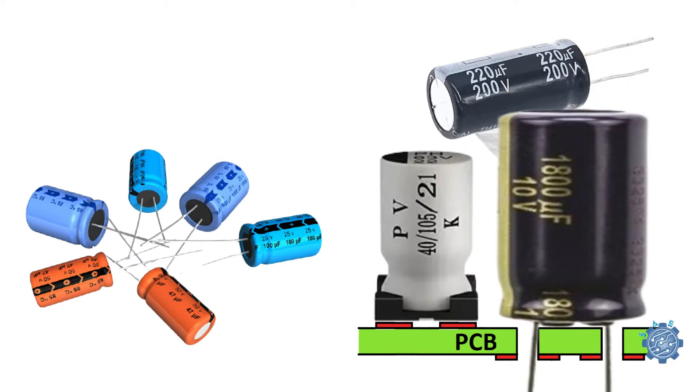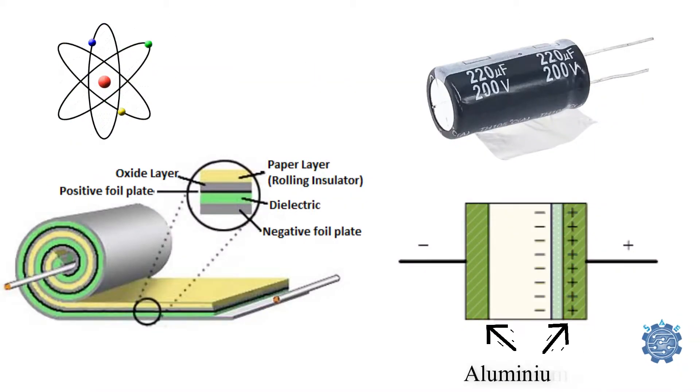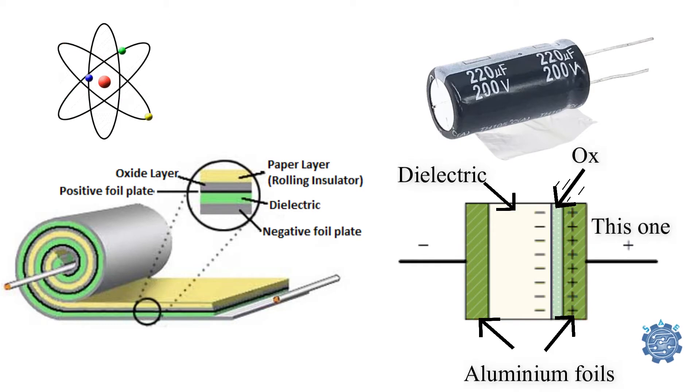They have the same structure: two separate aluminum foils and a dielectric soaked in electrolyte between them. One of the two aluminum foils is covered with an oxide layer and this one represents the anode, and the other one is uncoated and represents the cathode.